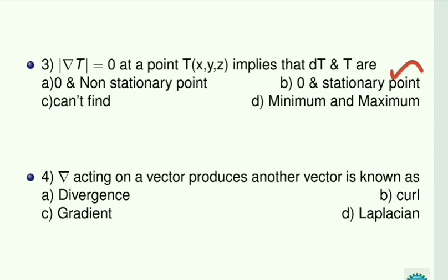Next: del acting on a vector produces another vector — this is known as? We know that if del acts on a vector and produces another vector, then it is known as the curl operation. So option B is correct.